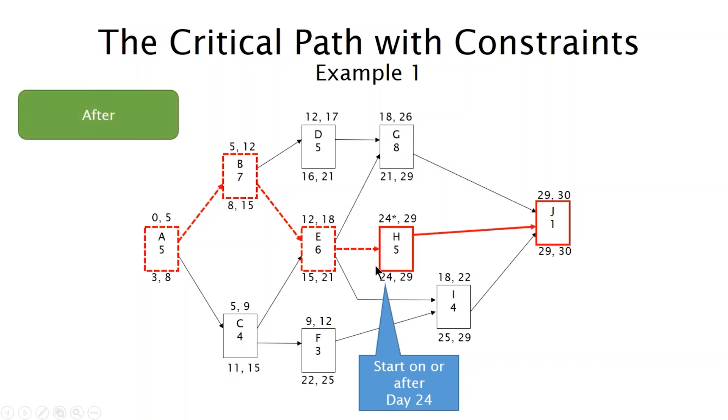And it's a simple soft constraint. So here's what happened. We pushed activity H into the future, which then altered the critical path. So by pushing H into the future with that start on or after constraint, it started, essentially what it did is it caused H to now drive J's dates. And it completely altered the critical path, as you can see.